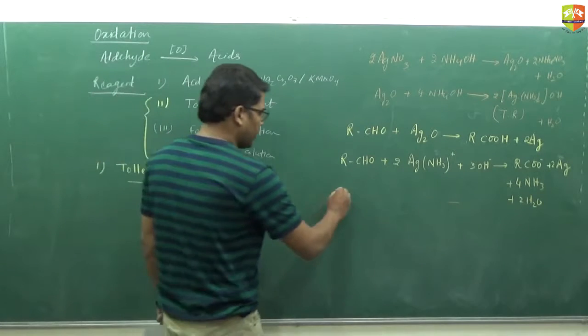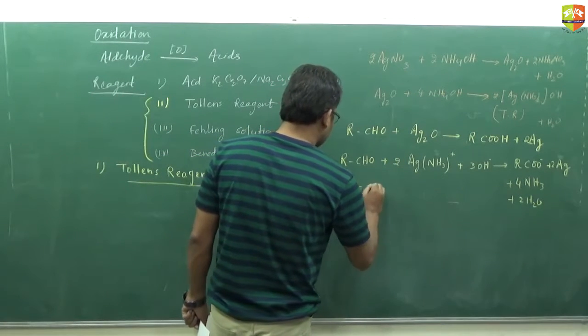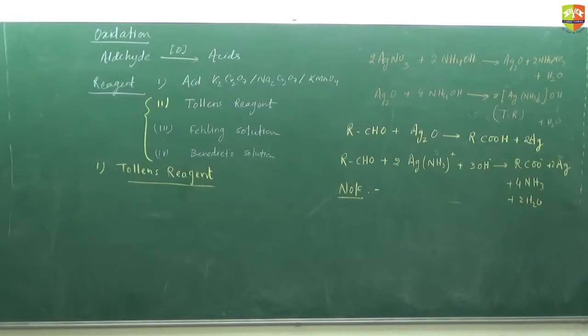Keep in mind that Tollens reagent is ammoniacal solution of silver nitrate. We get a silver layer here, silver metal forms, and that is why we call it silver mirror test. Write down this note: both aromatic and aliphatic aldehydes reduce Tollens reagent without affecting unsaturation.